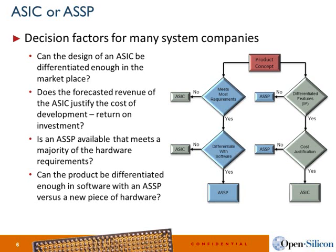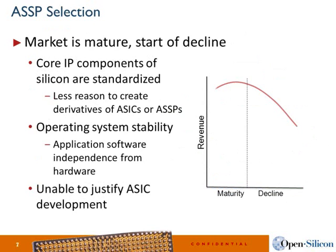When you choose an ASSP, you're already in that downturn. Your core IP is standardized, your operating systems are stable, and really the only way you can differentiate is at the application level — and the barrier to entry is not that high for software. It's much harder to build a chip. Many companies can write software, it's less costly and easier to outsource. Being unable to justify ASIC development is a red flag — as a company you have to figure out how to differentiate at the silicon level through your IP.